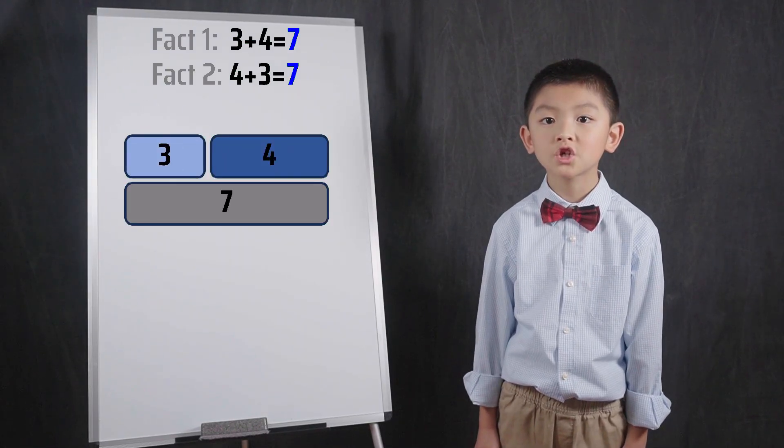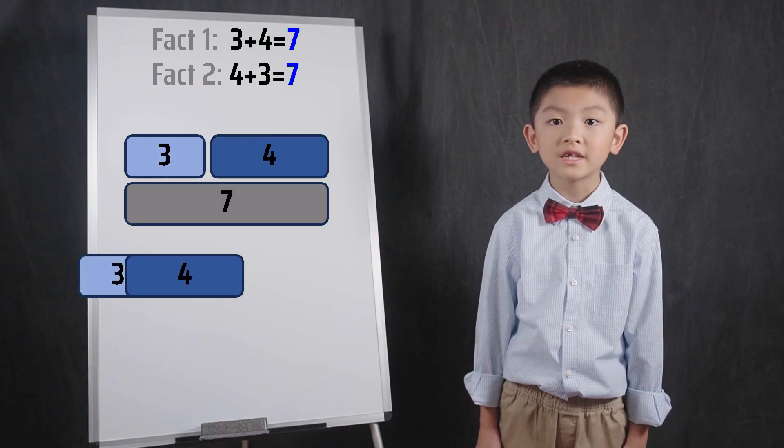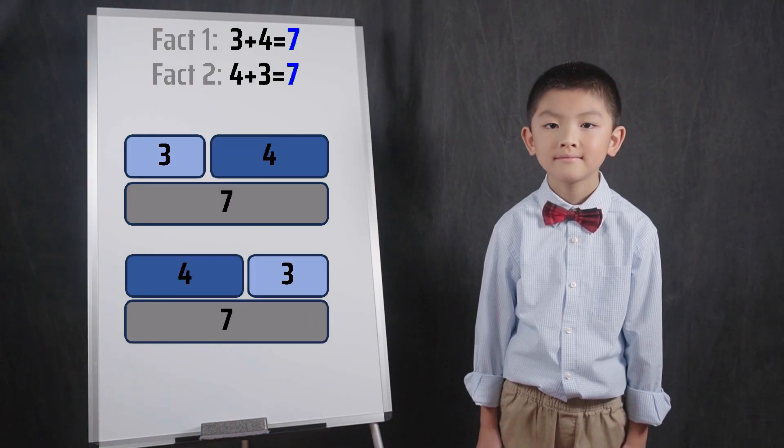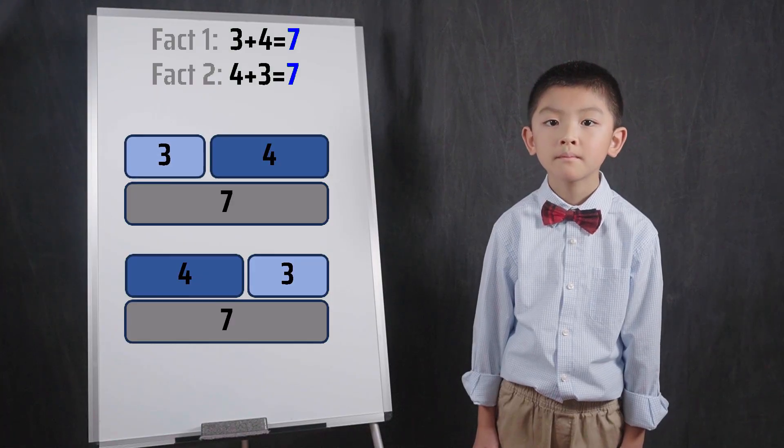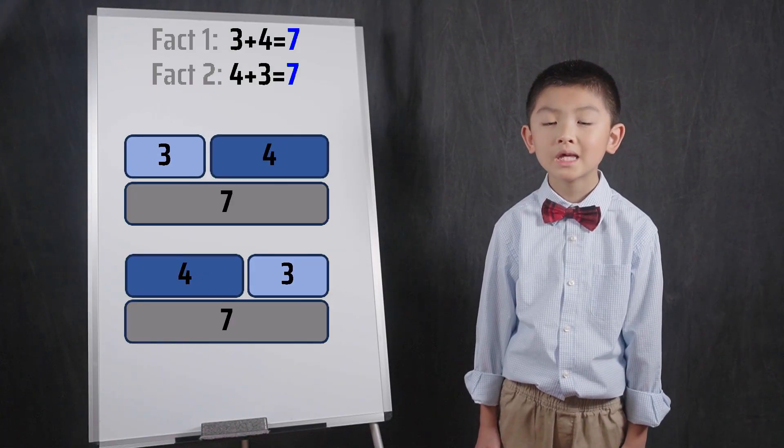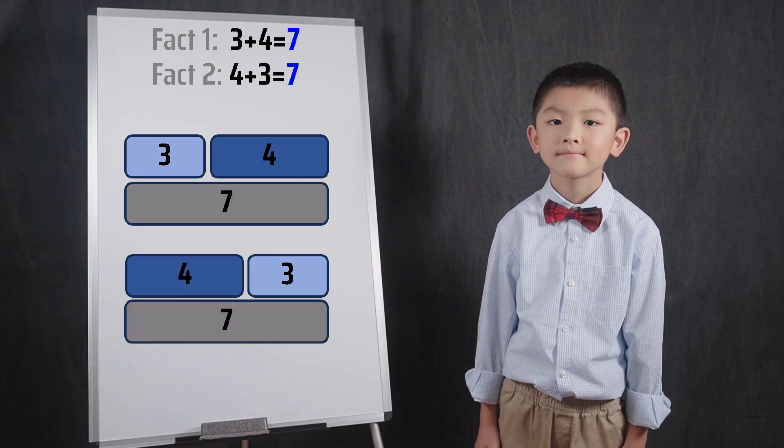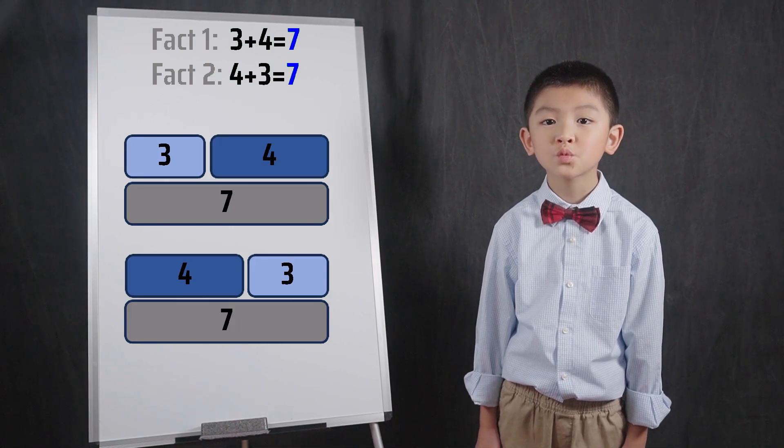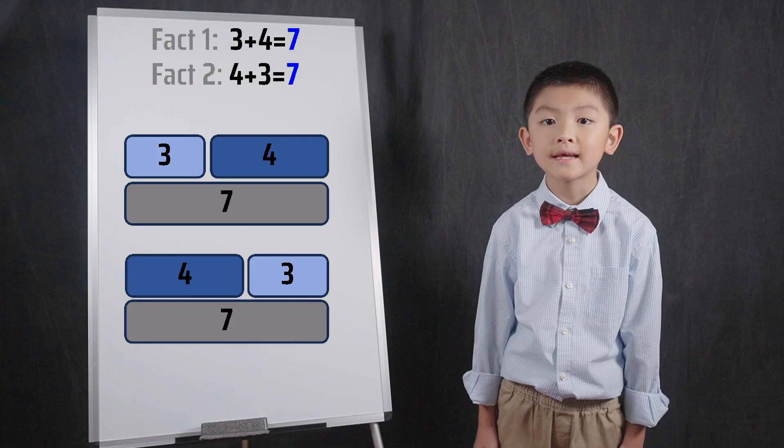These bar models illustrate that the order of addition does not matter. The length of the first bar plus the length of the second bar equals 7. It does not matter if you switch the order of the addends. The sum stays at 7.